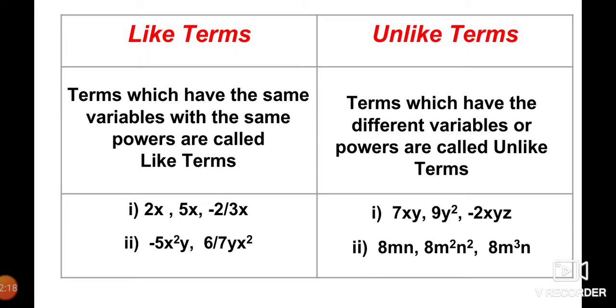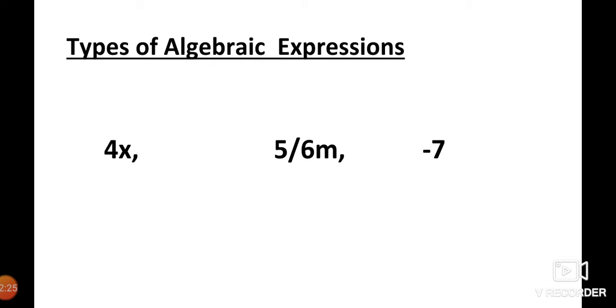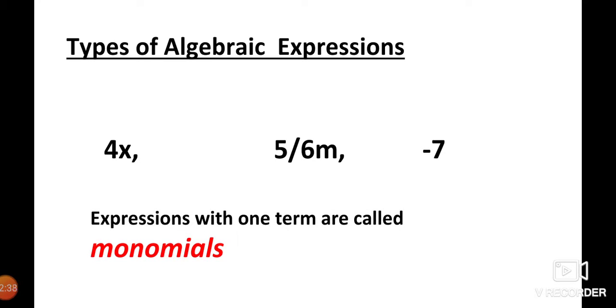Now we will see the types of algebraic expressions. For example: 4x, 5/(6m), and −7. In each of these algebraic expressions, only one term is present. Such algebraic expressions are called monomials. So expressions with one term are called monomials.